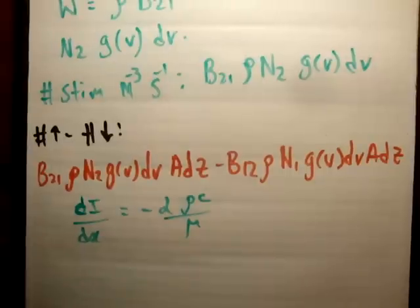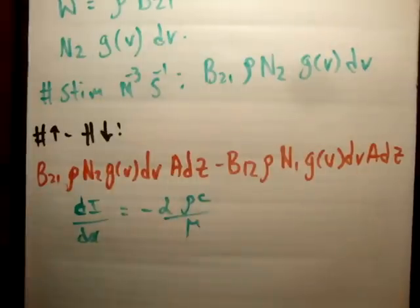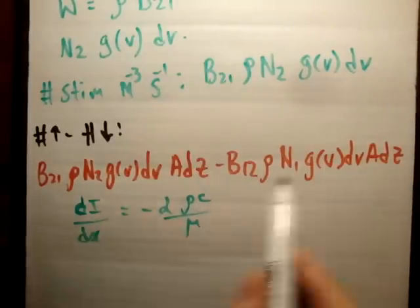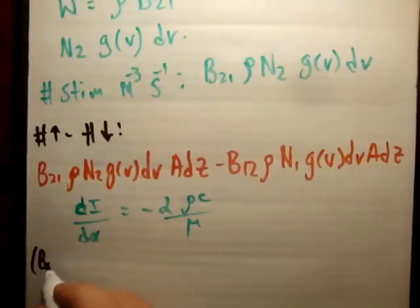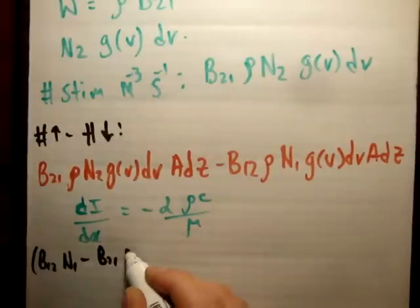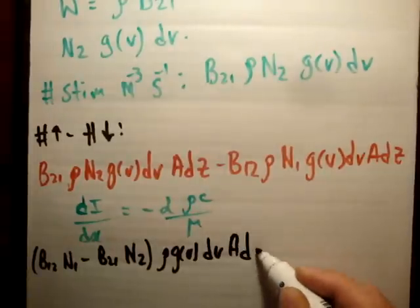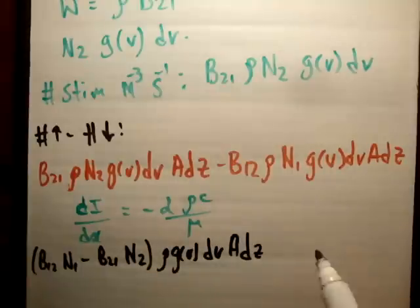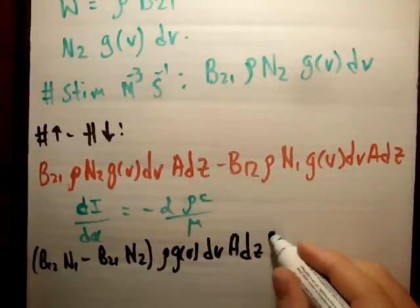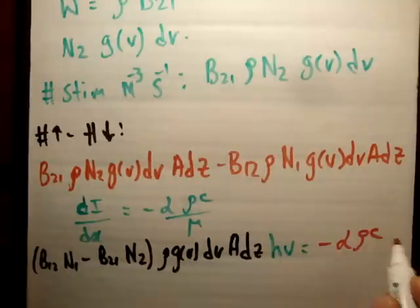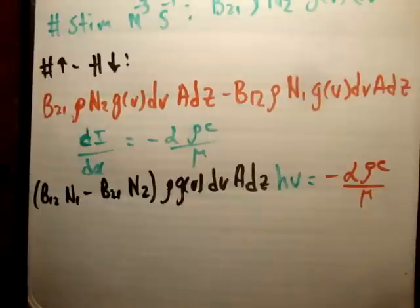What's dI/dx? dI/dx is the amount going upwards minus the amount going downwards, multiplied by the energy of those. This is a number, and if you multiply the number by the energy in a particular photon, you have the total energy. You can factorize this into b12 times N1 minus b21 N2, outside of rho g nu d nu A dz. That's the number. Multiply by the average energy of the photon h nu, and we get the total energy, which is dI/dx. This is equal to minus alpha rho c over mu, which is our index of refraction.